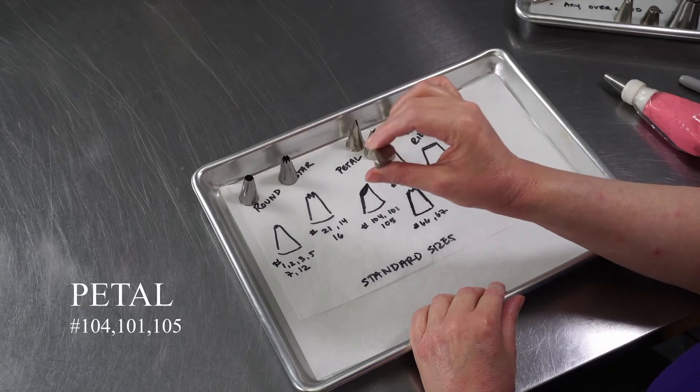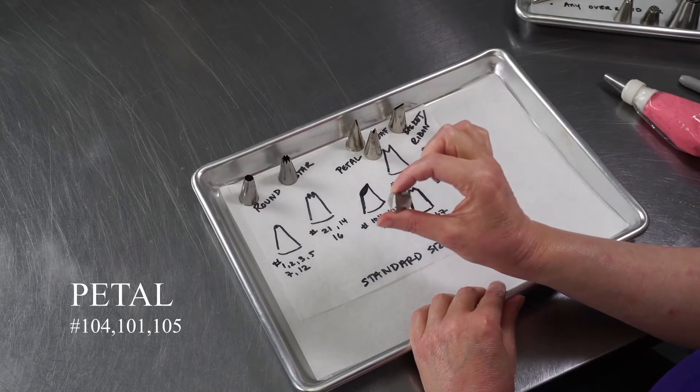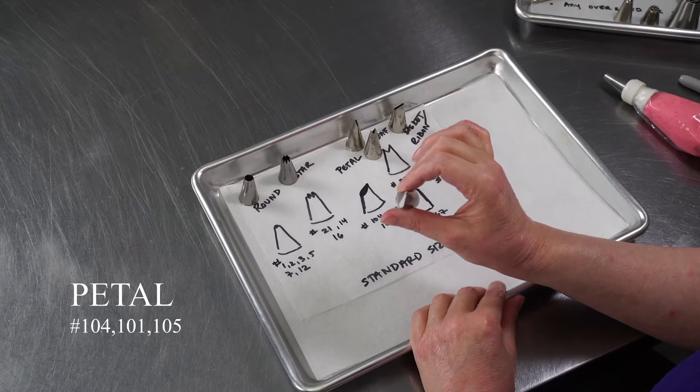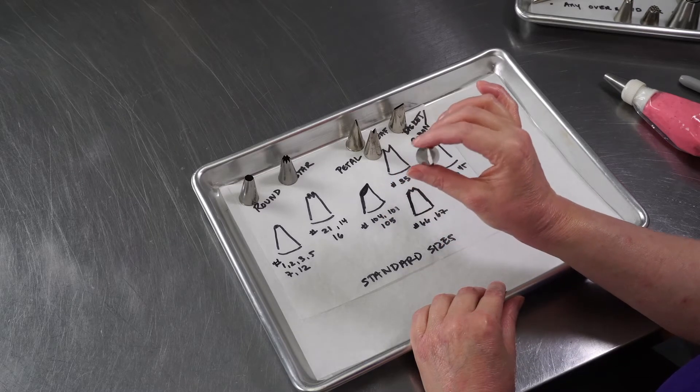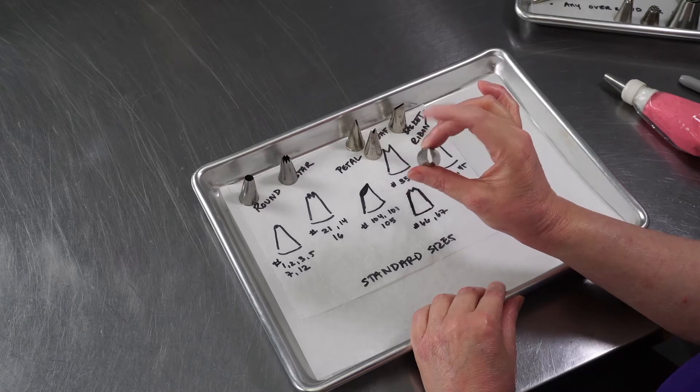And then there's the petal tips. You can use these for ruffles, making flowers, work with your piping nail or piping directly on your cakes. Popular sizes: 104, 101, and 105.